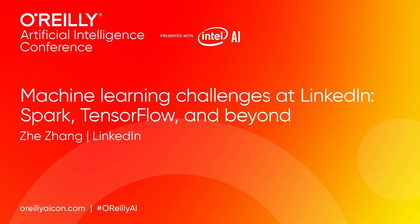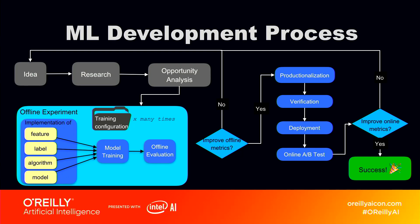I'd like to give an overview of the typical machine learning development process at LinkedIn. The first stage is idea. The machine learning engineer will have an idea of how to improve the product. This is typically tied to the business logic of the product.